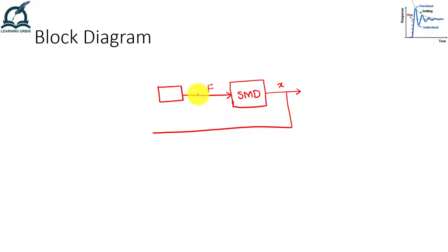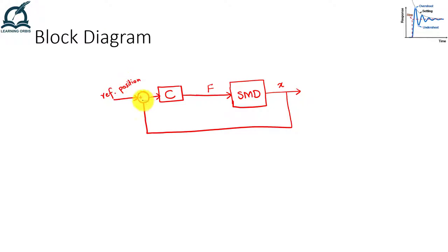We have a controller that generates a force. This controller needs to know the error — the difference between the desired position (reference) and the current position of the mass coming from the output. Subtracting these gives the error signal. Depending on this error, the controller generates a force to move the mass to the reference position. This is the closed-loop block diagram we are going to implement.